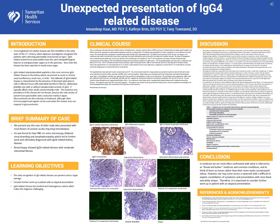The CT scan showed stranding around the bilateral kidneys and lymphadenopathy in the abdomen and pelvis, concerning for malignancy, which led to further workup. The patient was found to have elevated IgG4 and a renal biopsy consistent with IgG4-related disease.